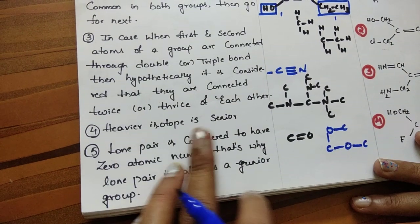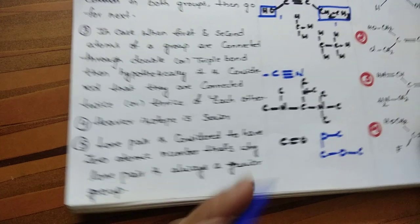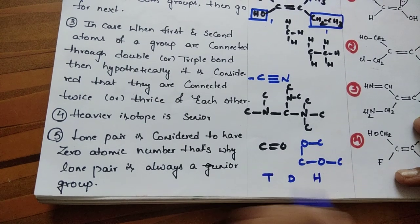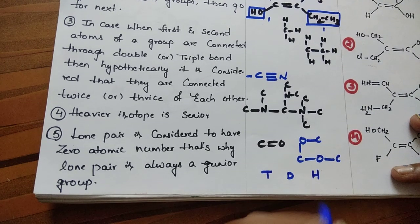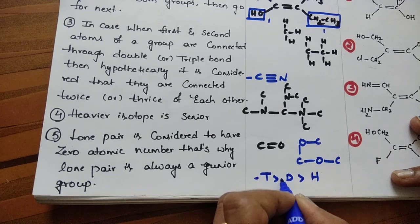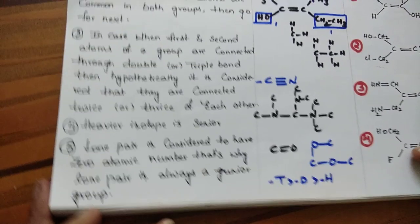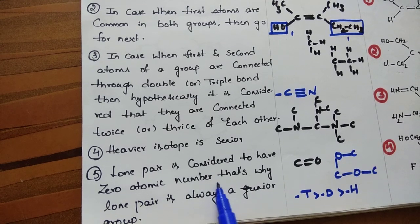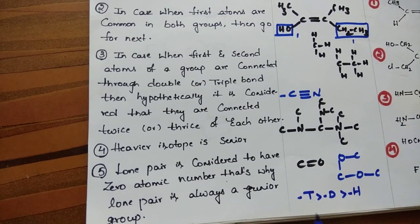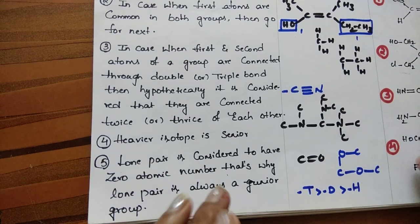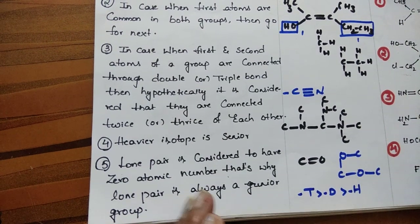Rule number 4: The heavier isotope is the senior group. Suppose tritium, deuterium, and protium are there. Among these three, you have to give priority first to tritium, then deuterium, then protium. Rule number 5: Lone pair is considered to have 0 atomic number, that is why lone pair is always the junior group. If any lone pair is there, you should consider it as a junior group because there is no atomic number for the lone pair.